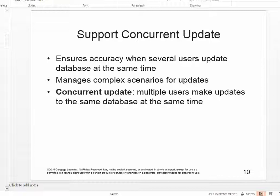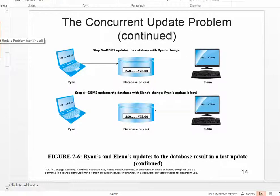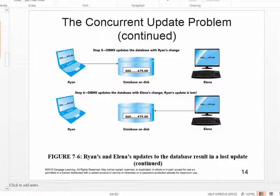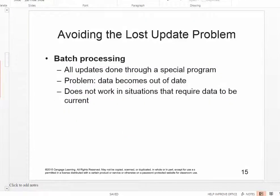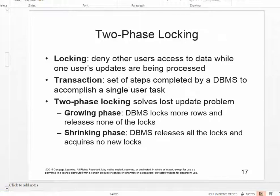Database management systems also support concurrent update, which means that more than one person can be making updates to the same database at the same time. Sometimes with concurrent updates, problems can occur, such as losing updates if too many people are making the exact same changes to the exact same data simultaneously. Database management systems help you avoid losing information in that way — one approach is through batch processing. You're also going to read about two-phase locking, which solves that update problem so you don't lose data.